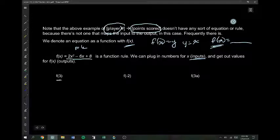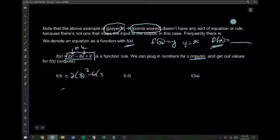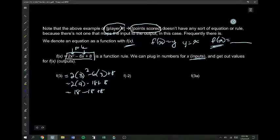So, here's a function rule. f of x equals 2x squared minus 6x plus 8. We can plug in numbers for x that are the input and get out values for f of x, which are the outputs. So, for example, this is read as f of 3. Don't say f times 3. Don't say f parenthesis 3. This is f of 3. And this means take your function and plug in a 3 for all the x's. So, wherever I had an x, here and here, I will now have a 3. Make sure you do your order of operations correctly. So, 3 squared is 9. 2 times 9 is 18. 18 minus 18 plus 8 is 8. So, if I plug in a 3 for x, I get out an 8 for y. The input was 3. The output was 8.